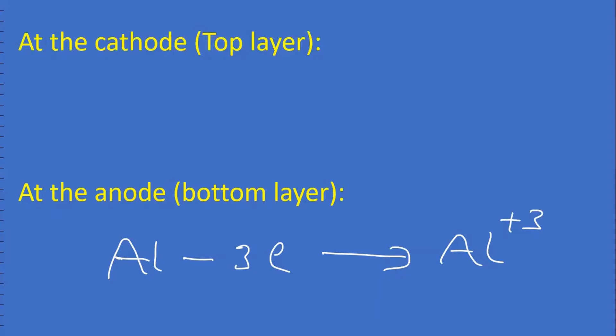At cathode, the top layer, aluminum 3+ ions accept 3 electrons. During the process, the impurities are removed.